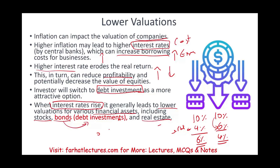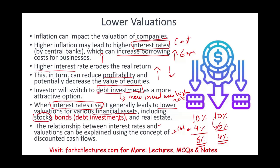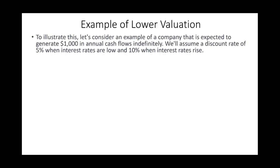You might ask: if investors switch to debt, why do bonds go down in value too? Investors switch to newly issued debt at the new higher rates — existing debt investments go down in value. The relationship between interest rates and asset valuation can be explained using the Discounted Cash Flow (DCF) model. Let's assume a company is expected to generate $1,000 in annual cash flow indefinitely, and the current interest rate is 5%.